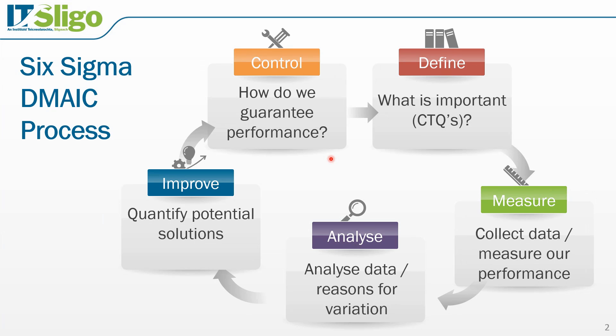Hello and welcome to the final week of this lecture series. The final step of the domain process is known as the control phase. In this phase we aim to control the performance of the process and to ensure that the performance gains made are institutionalized and regularly monitored. This is achieved by means of the control plan.